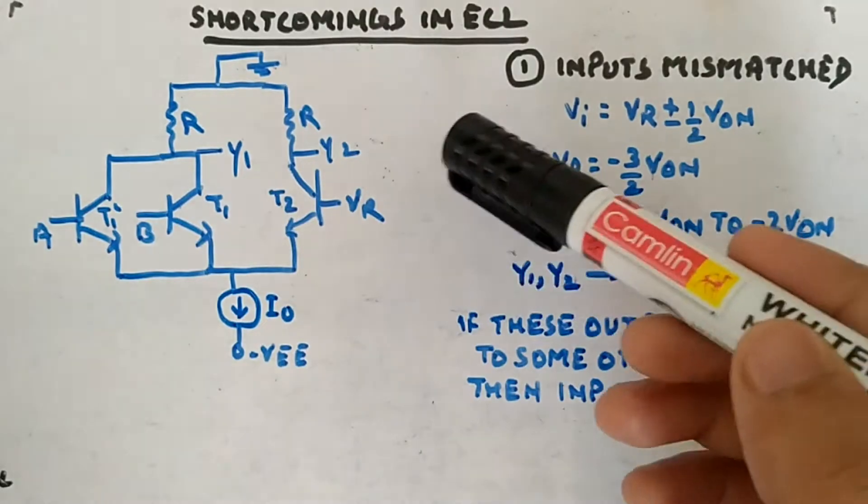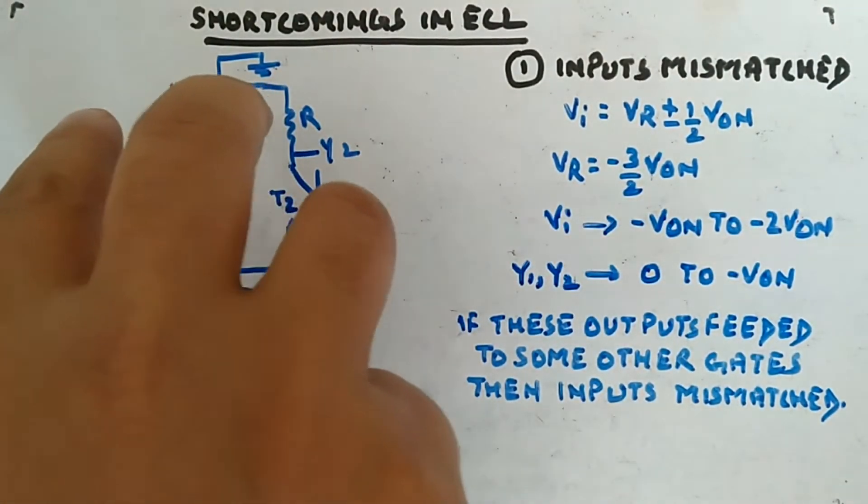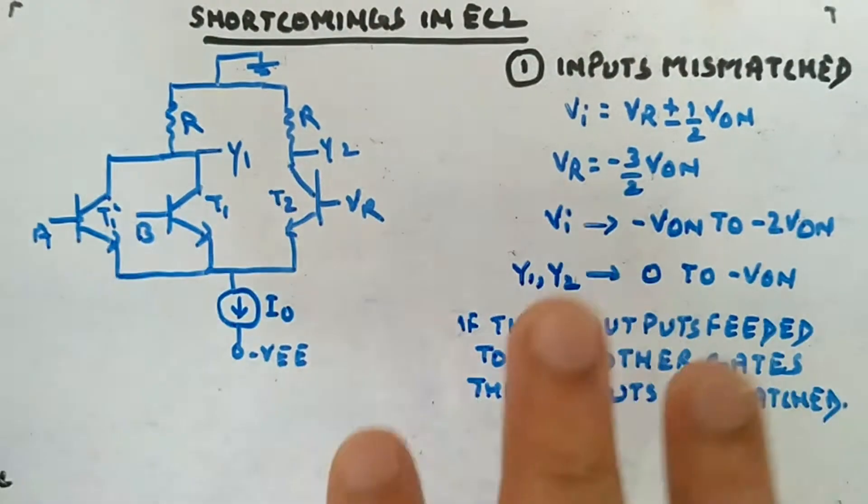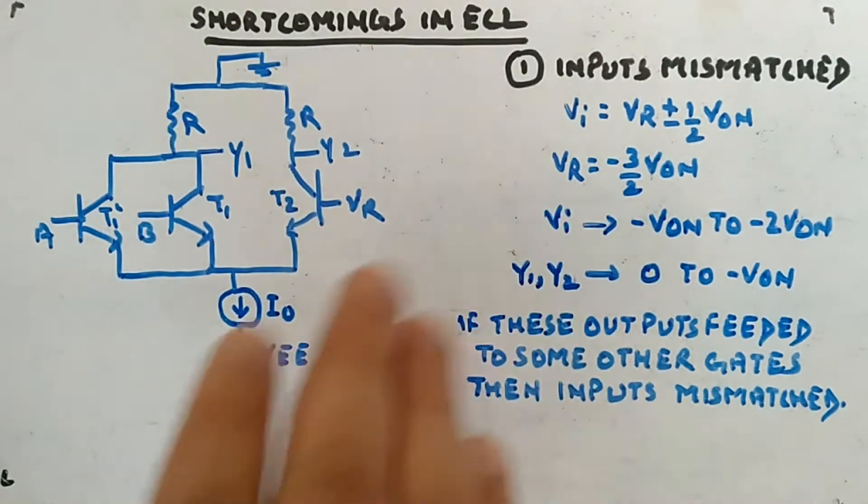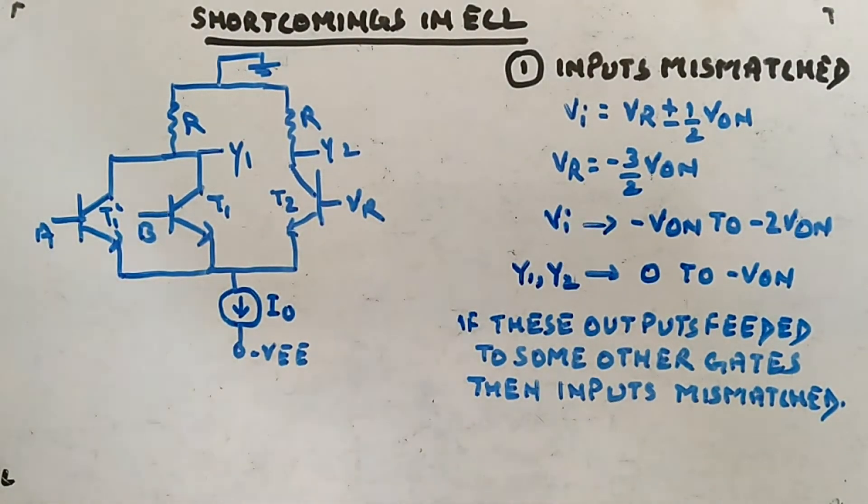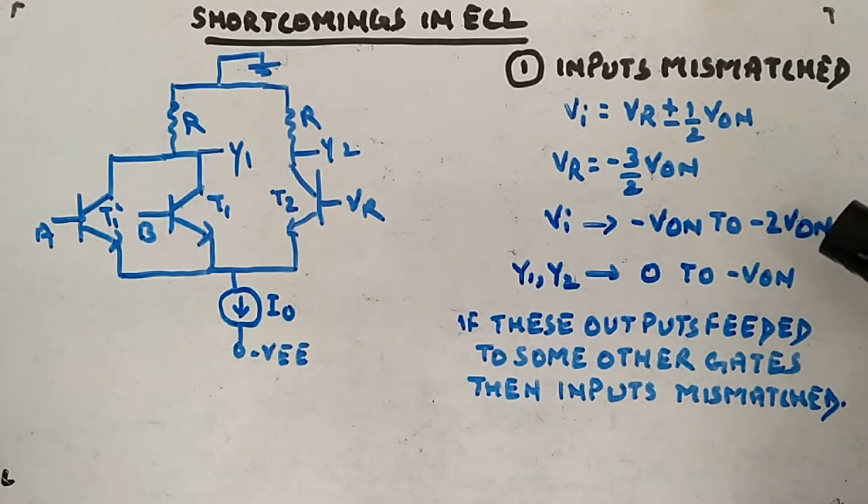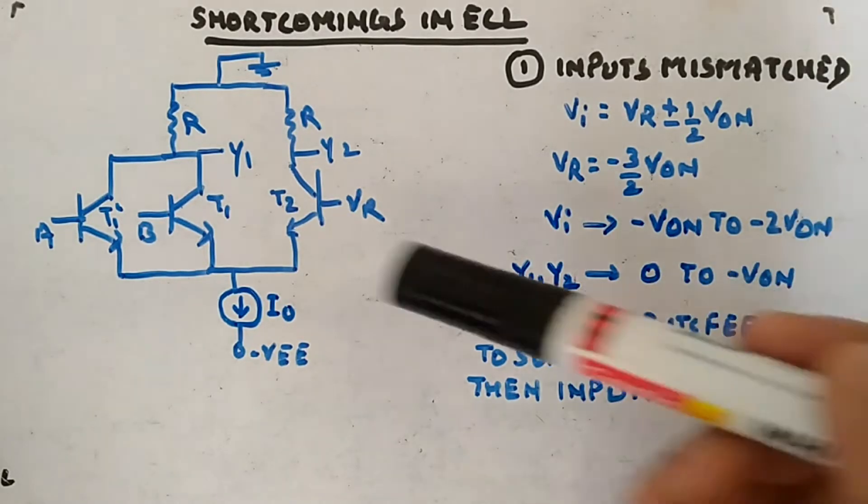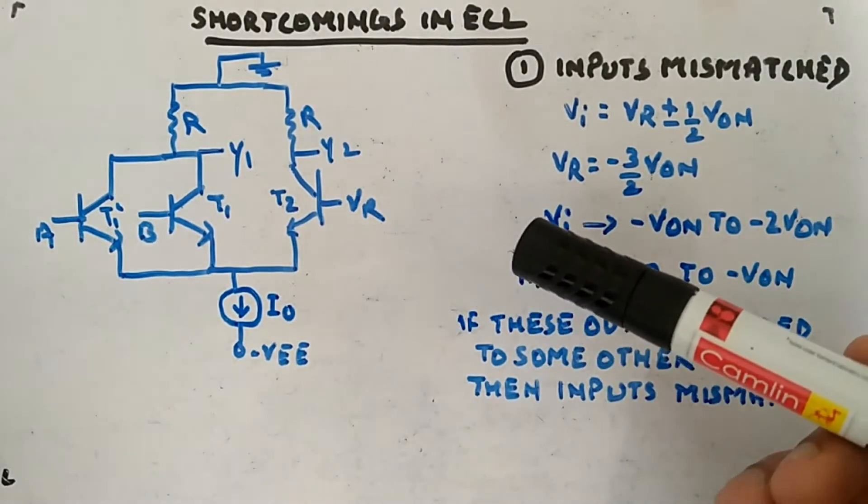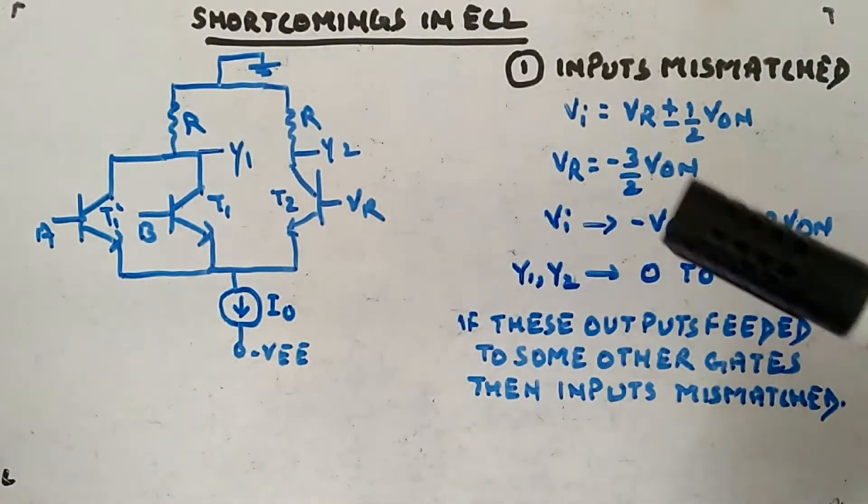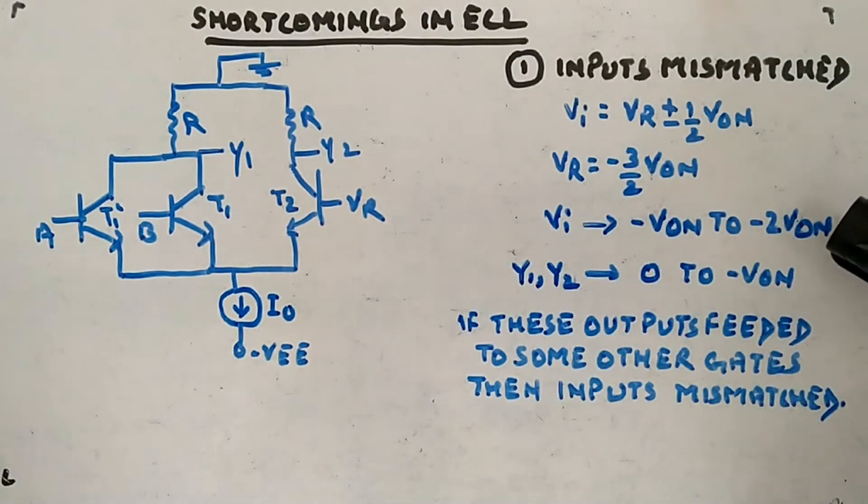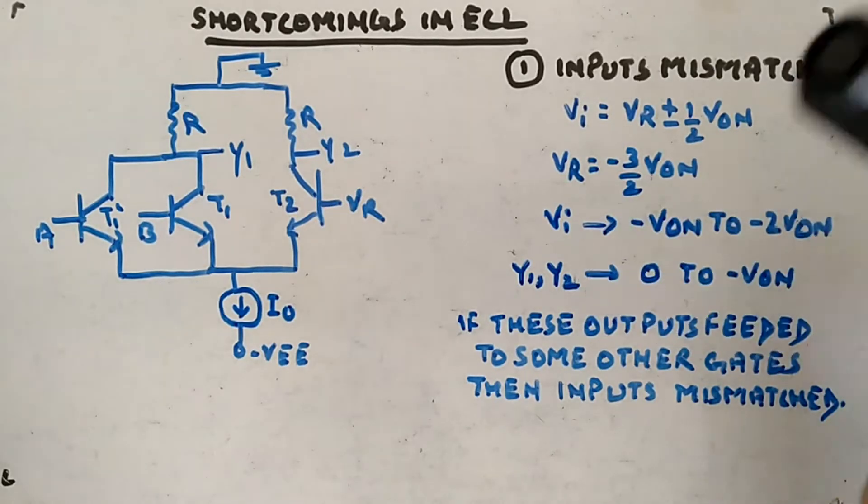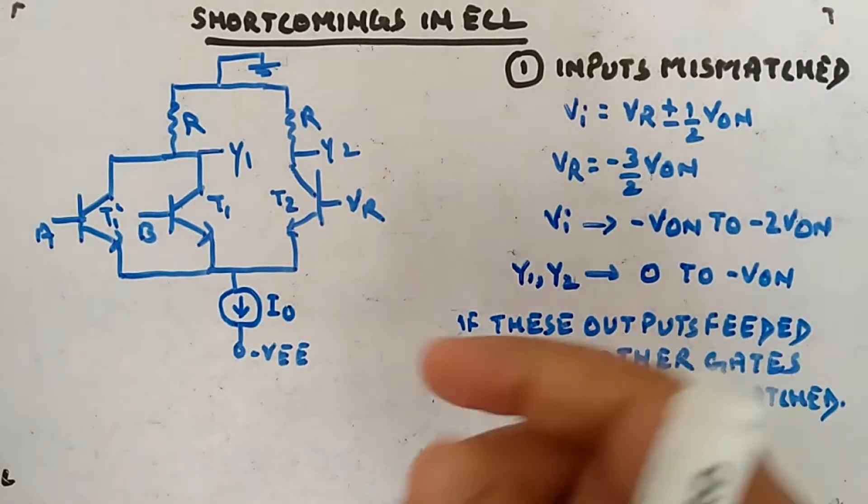Now imagine if you are driving some other gate, you will have this kind of circuit ahead as well. The output will be fed to the input of those circuits. Here you are defining the input range between minus VON to minus 2 VON, output is between 0 to minus VON. If you give this as an input to some other gate, they will expect minus VON to minus 2 VON input but you are providing 0 to minus VON.